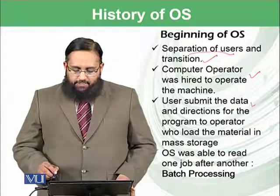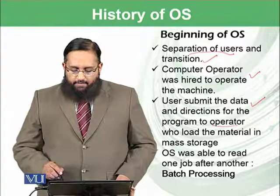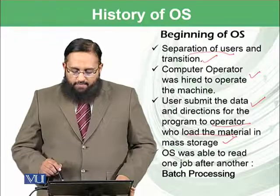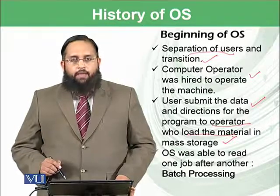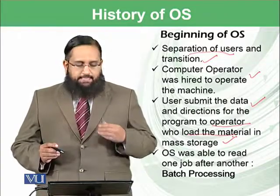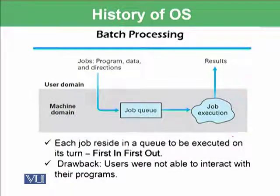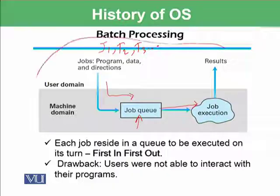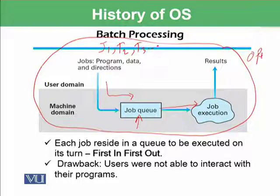The OS was able to read one job after another, and such processing was known as batch processing. For example, different users gave jobs J1, J2, J3, and so on, and those jobs went into a job queue. Then one by one, each job was executed, and all such operations were performed by the operator.